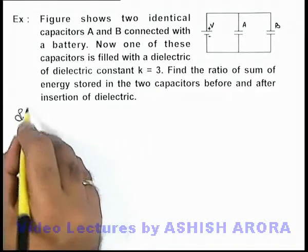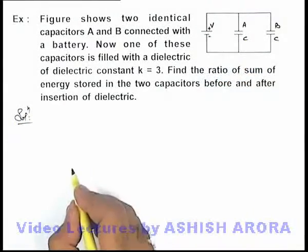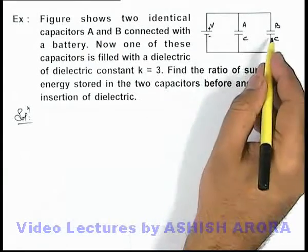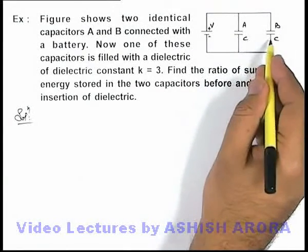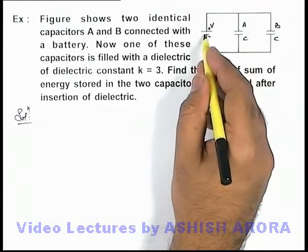In this situation, let us consider both of these capacitors are of capacitance C, and as they are connected in parallel, the equivalent capacitance will be 2C, and they are connected across the battery V.